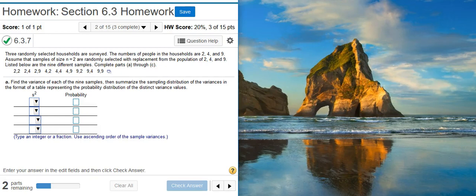Howdy, I'm Professor Curtis of Aspire Mountain Academy, here with more statistics homework help. Today we're going to learn how to create a variance sampling distribution probability distribution table. Here's our problem statement: three randomly selected households are surveyed. The number of people in the households are two, four, and nine.